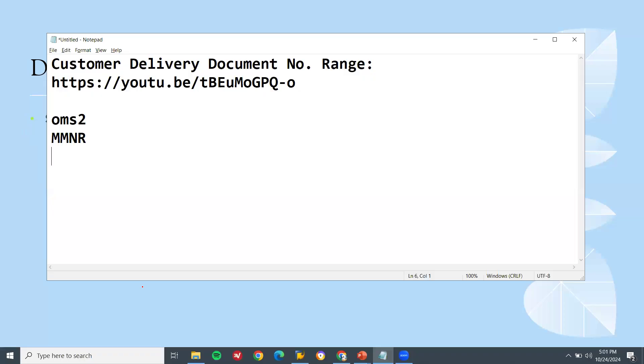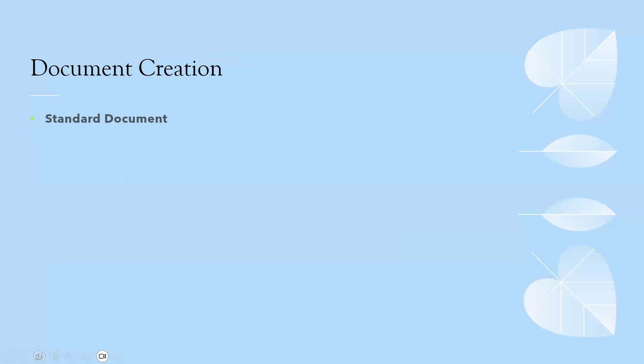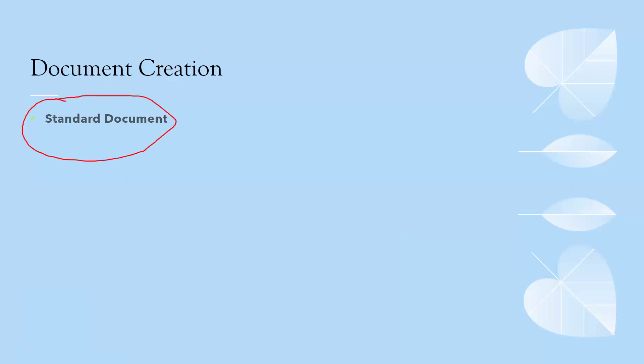Next is document creation. Normally the standard document type is OR for a sales order, but in real-time projects they may ask you to create a separate sales order document type for the business — the standard OR document will not be accepted. You have to create a fresh document. A link has been provided in the description on how to create a document. This comes under either a change request or, mainly, under implementation.